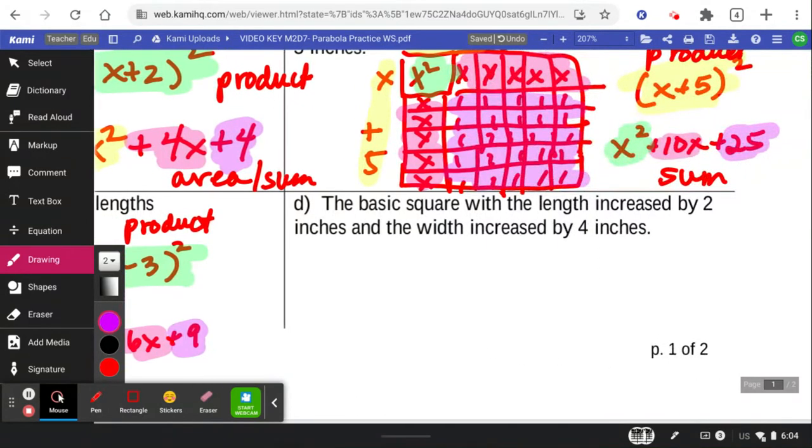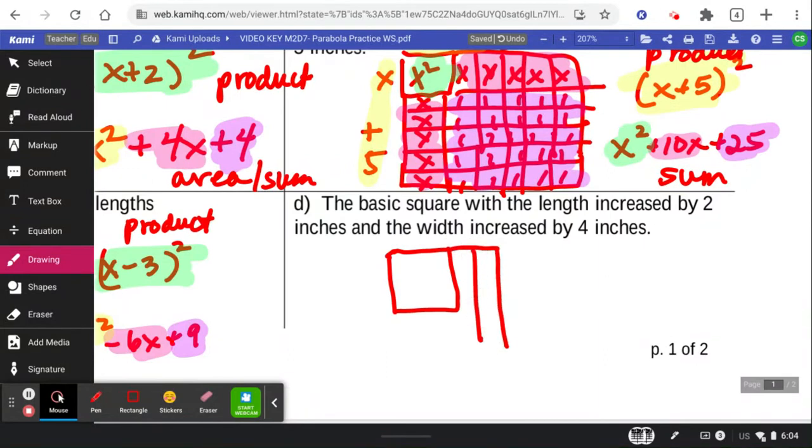Increased by 2, okay, so here we go. This time, increased by 2 on one side and increased by 4 on the other. So this is no longer a square, this is a rectangle.